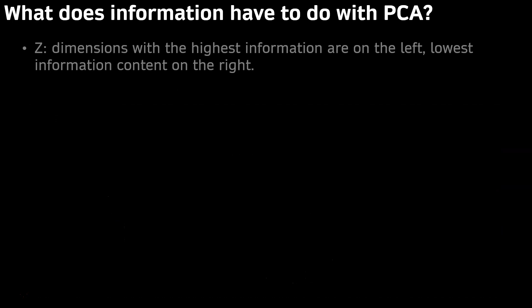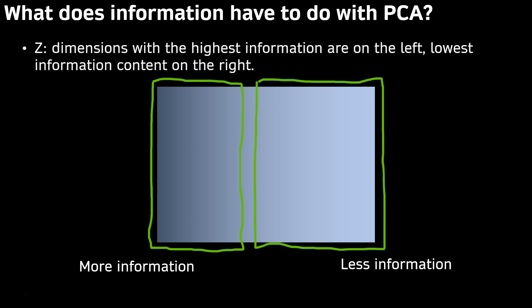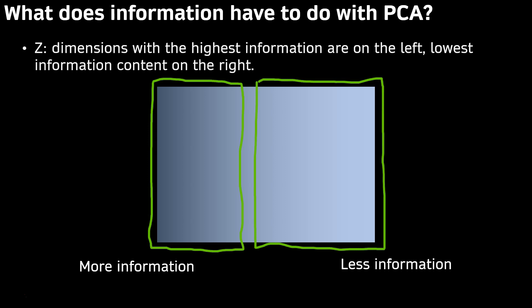What does information have to do with PCA? Let's organize these so that the dimensions with the highest information content are on the left, lowest information content on the right. Let's call the dimensions height and weight for this example. Z1 has more variance than Z2.